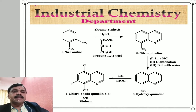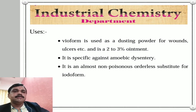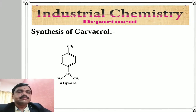Medicinal applications of Vioform: It is used as a dusting powder for wounds, ulcers, etc., and as a 2–3% ointment. It is specific against amoebic dysentery, where it produces results in a short time. It is an almost non-poisonous, odorless substitute for iodoform.